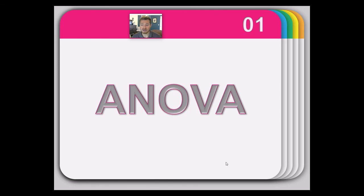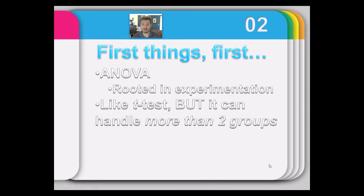Let's start talking about the history of ANOVA. The first thing to realize is that ANOVA is rooted in the history of experimentation, just like the t-test was. ANOVA was developed to do something the t-test could not do, which is compare more than two groups at a time.